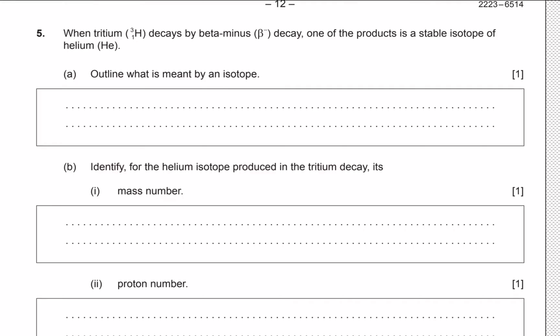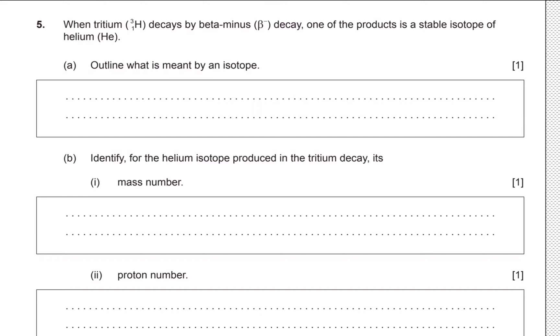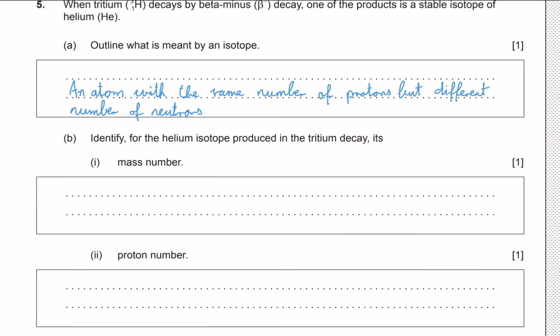First of all, we need to state what an isotope is. This is just a simple definition we need to learn. It comes up quite often in exams. Pretty much an isotope is just an atom with the same number of protons but different number of neutrons. So yeah, this is just the simple definition of an isotope for one mark.